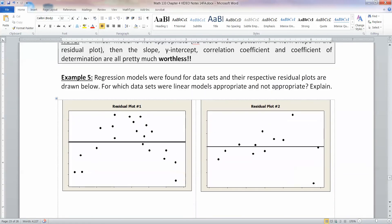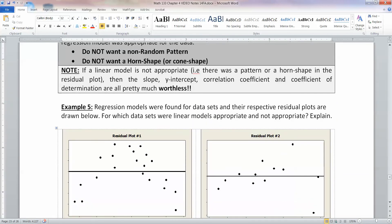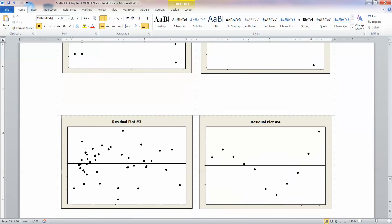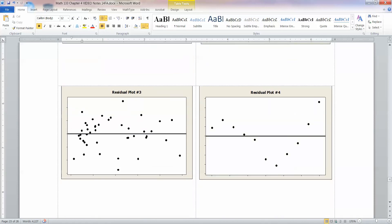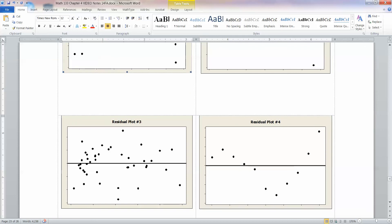What you want is you want a random pattern. You do not want a non-random pattern. You do not want a horn shape. Now, if that's the case and you want things to look kind of random, you want them to look like somebody threw the dots up on the screen, then this is the one that's linear. Linear model appropriate because the residual plot is all random dots. There's no pattern going on there at all. That's what we want. No pattern.